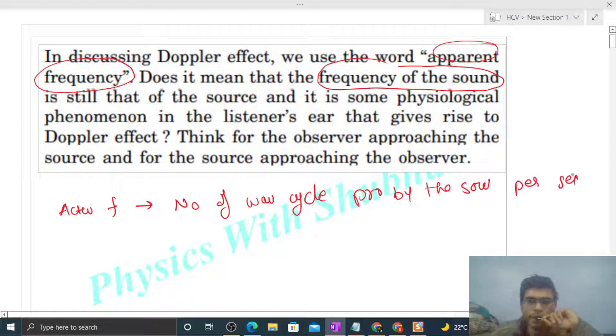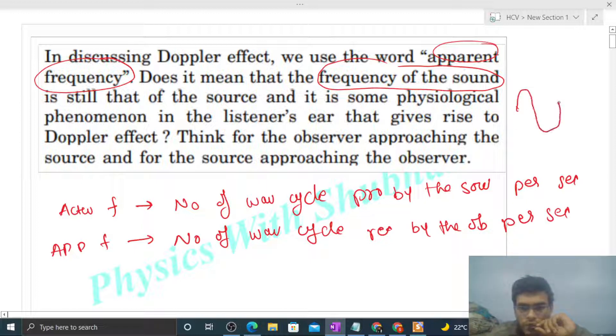And what is apparent frequency? That is the number of wave cycles received by the observer per second. Now what is one wave cycle? When one wave completes, we call that a wave cycle.